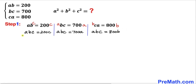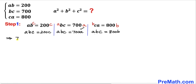We can see that abc is the same in all three equations. So we can equate all three expressions and write: 700a = 800b = 200c.